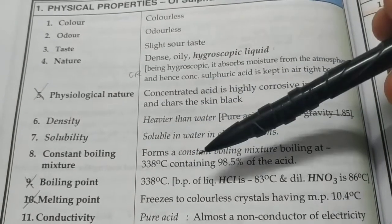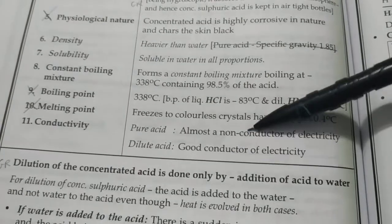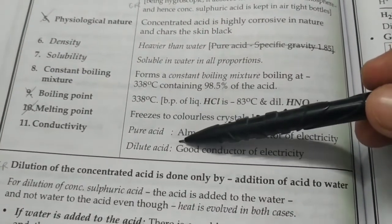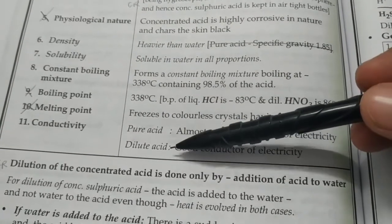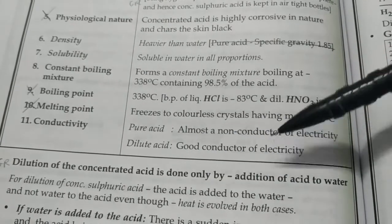Conductivity: pure acid is a bad conductor because high concentration of acid will have hardly any hydronium ions or any ions at all. A dilute acid has a lot of water, so ionization will take place and ions will be formed which will make it a good conductor of electricity.